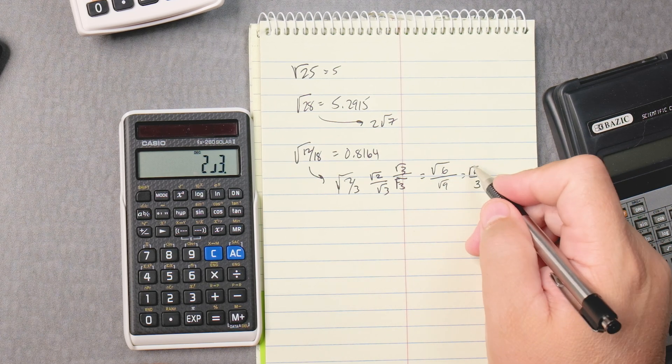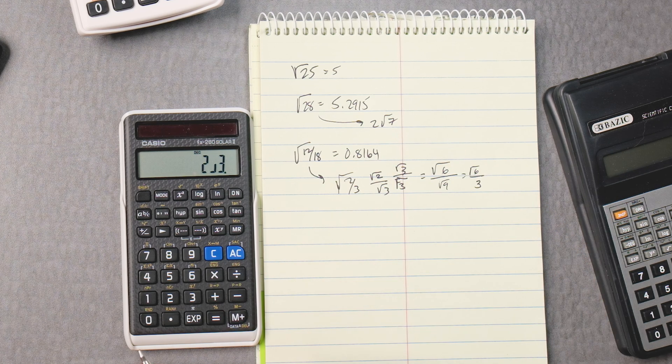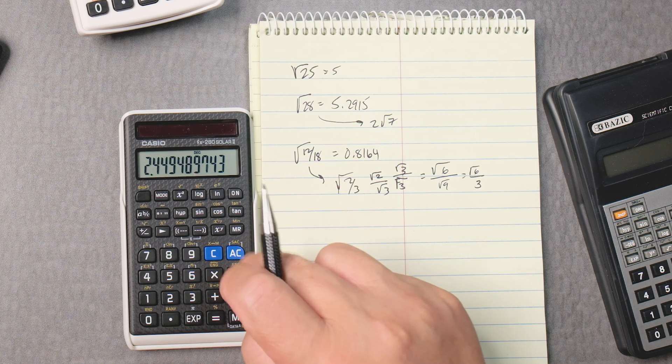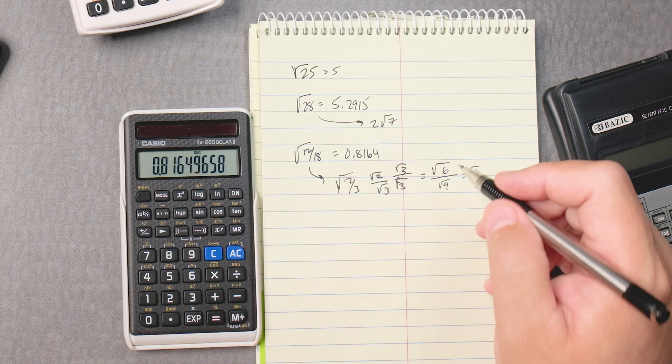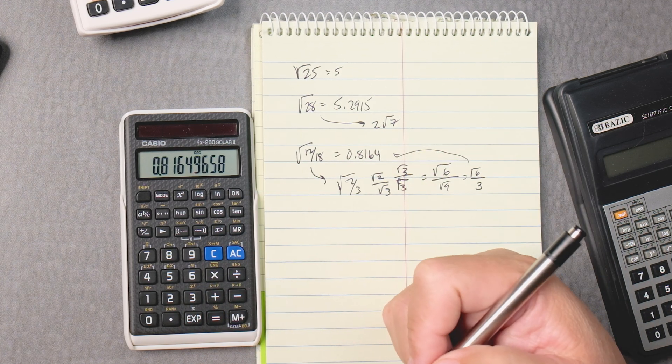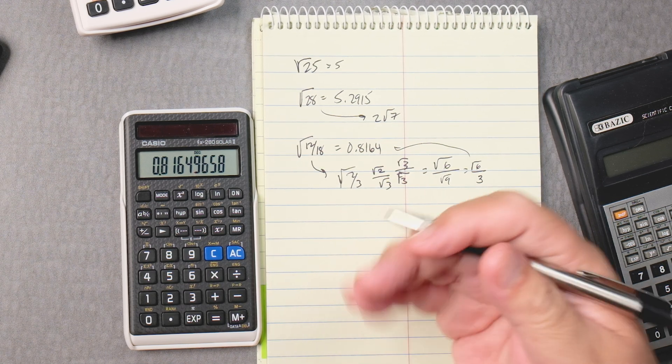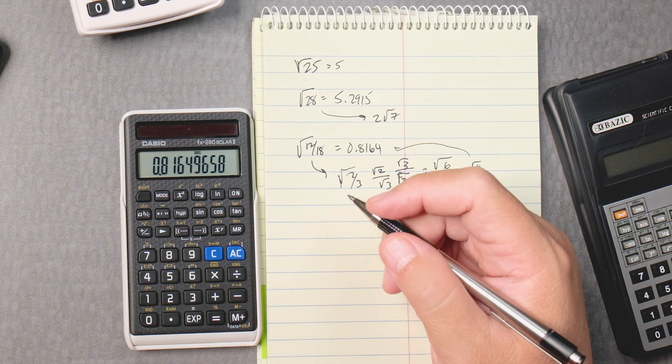If you want to check it to see if it's the same answer, let's see, you go 6, take the square root of that, divide it by 3 equals, gives you the same answer. See that? So the calculator can help you on some features in terms of reducing things and helping you to move forward with it.